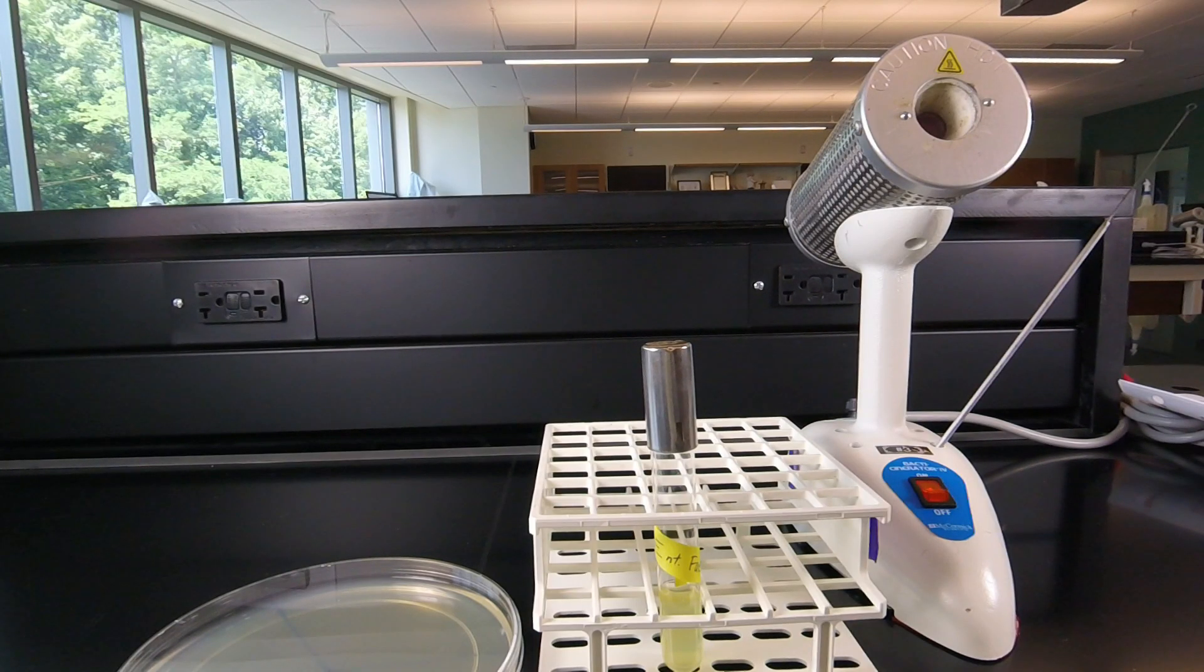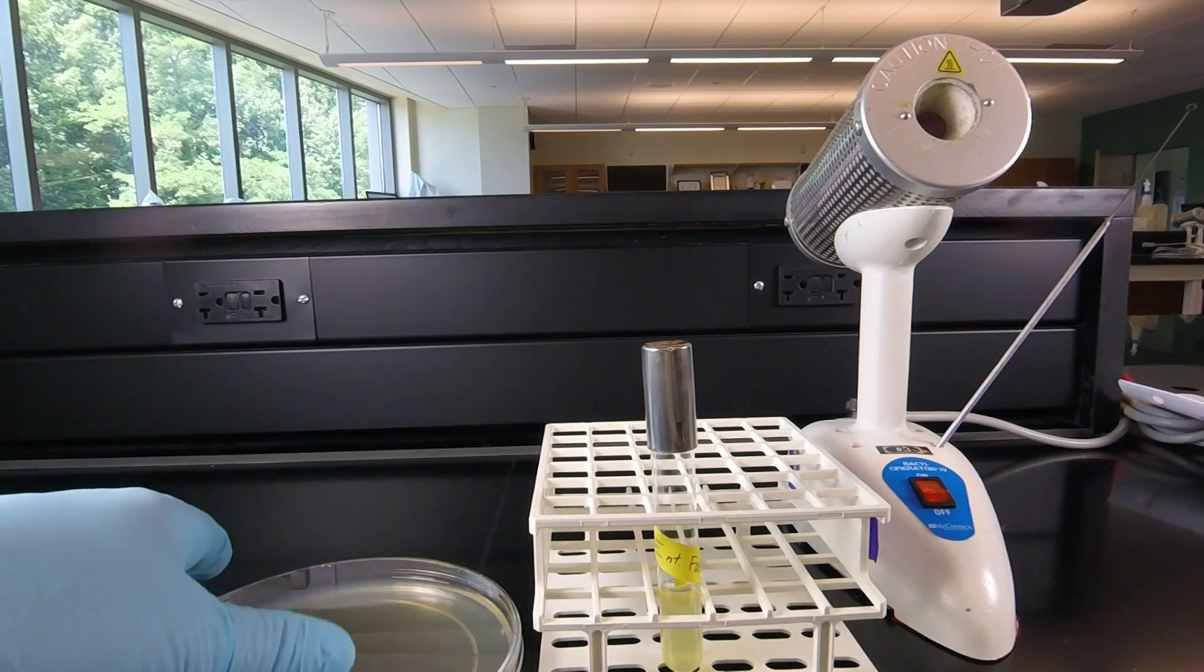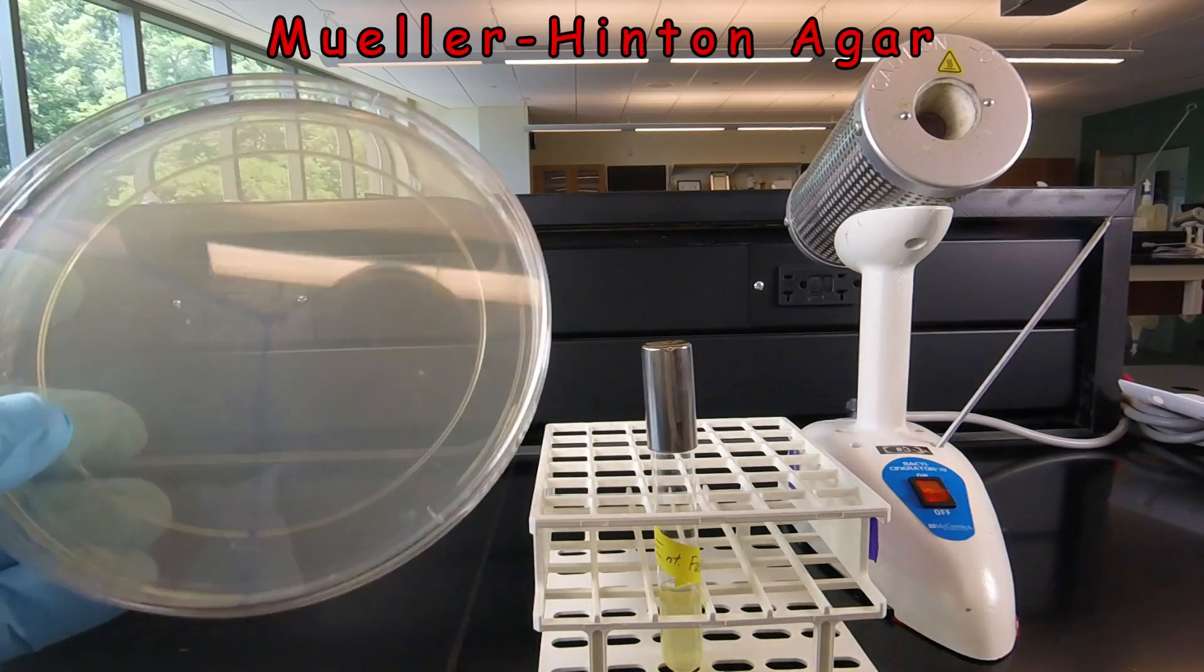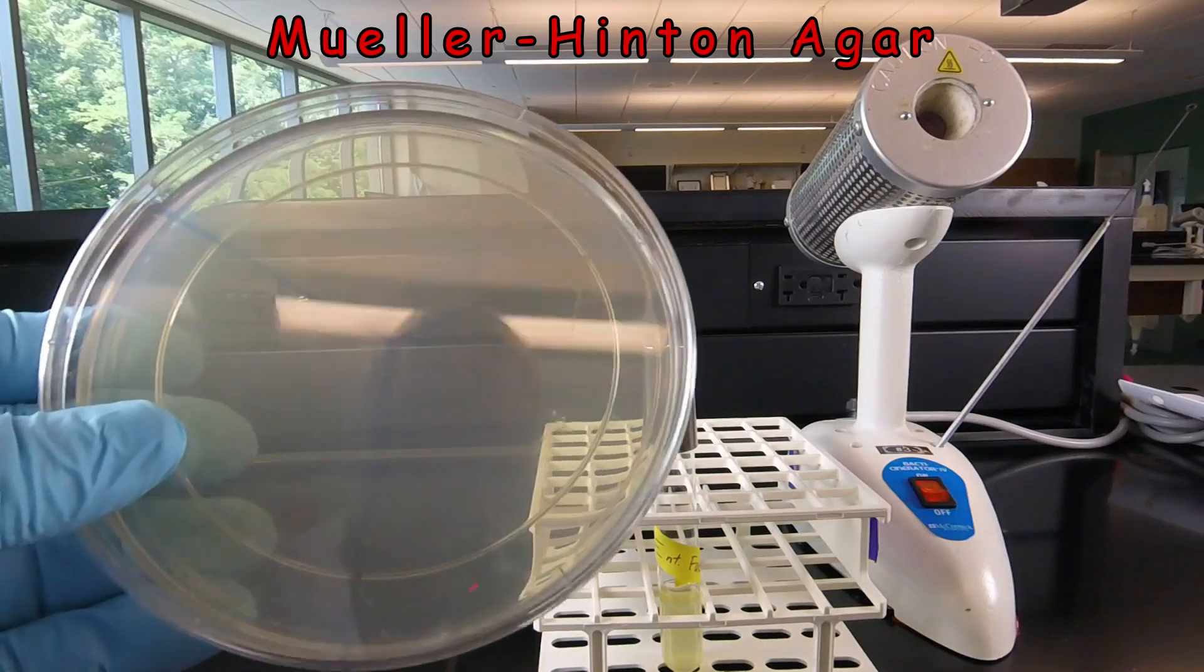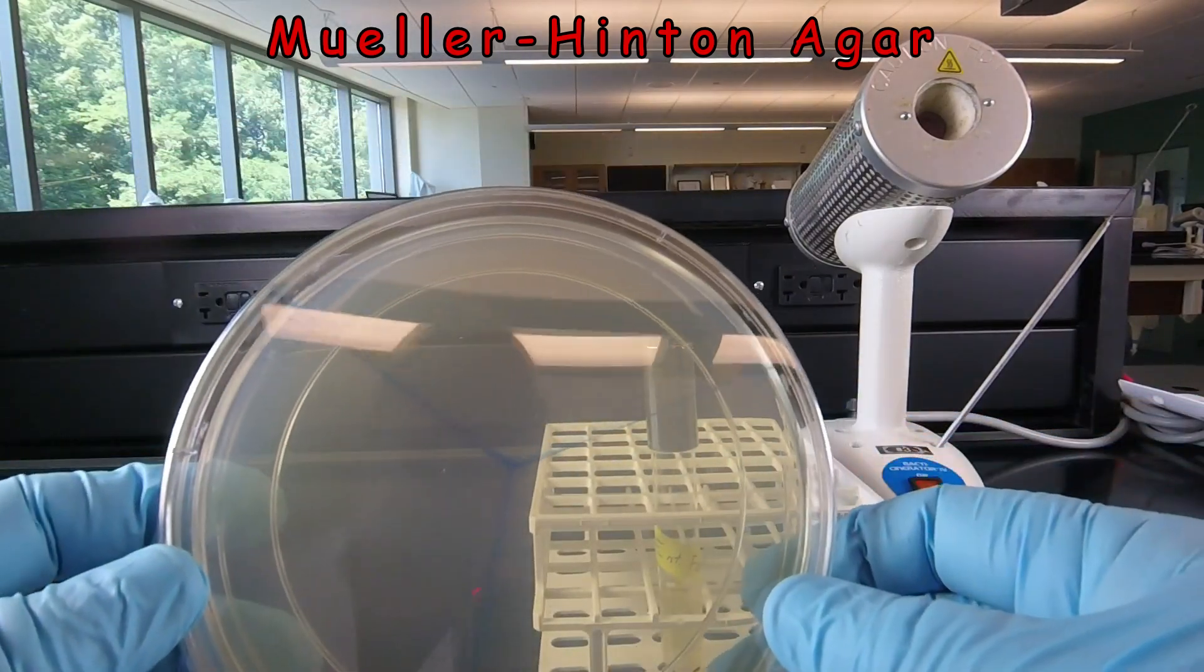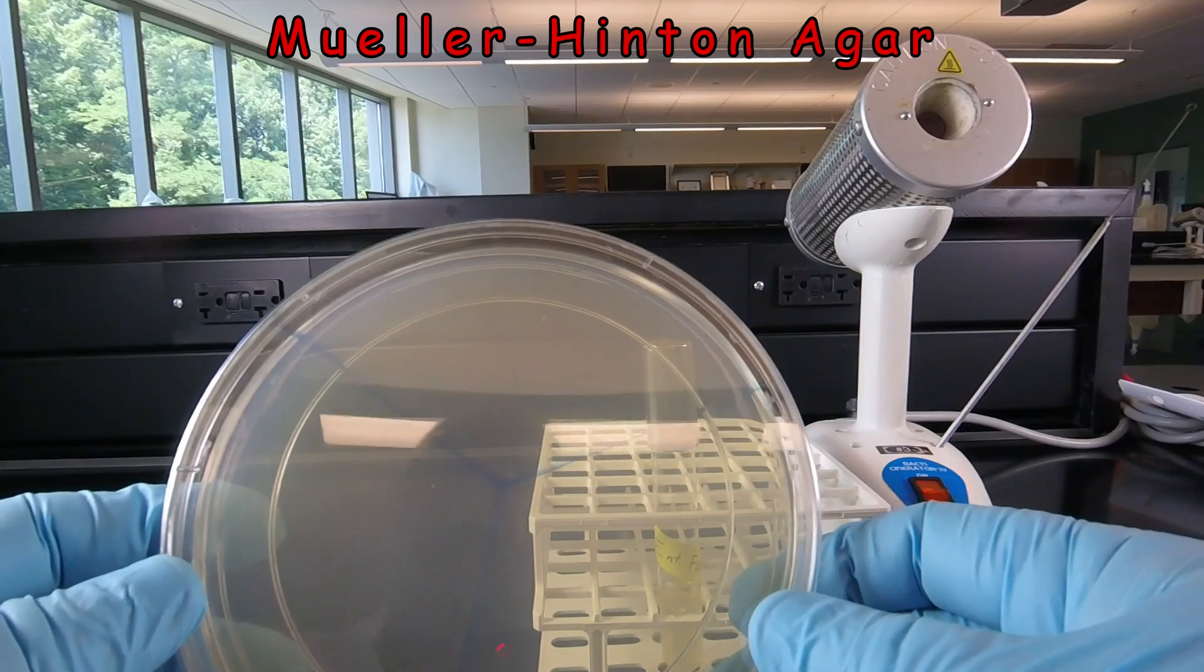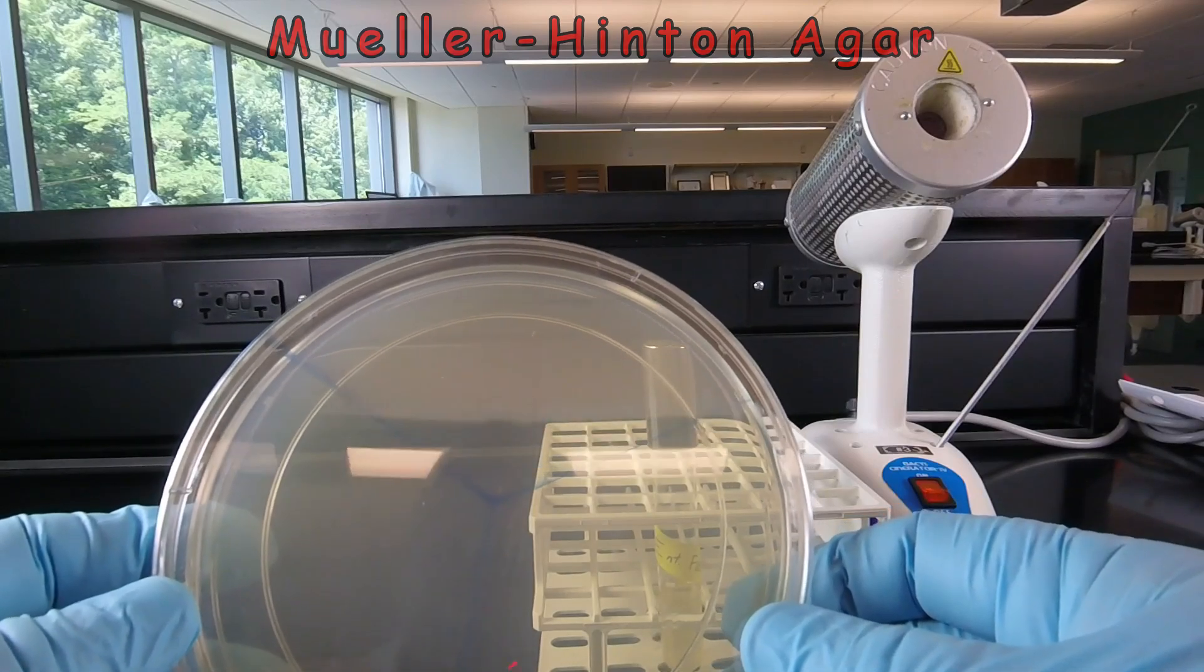In this video lesson, we're going to learn how to do the Bauer-Kirby method of antibiotic susceptibility testing. For that method, we use a standard size agar plate called Mueller Hinton Agar, and these are the large 150 millimeter plates that will hold 12 different antibiotic discs.